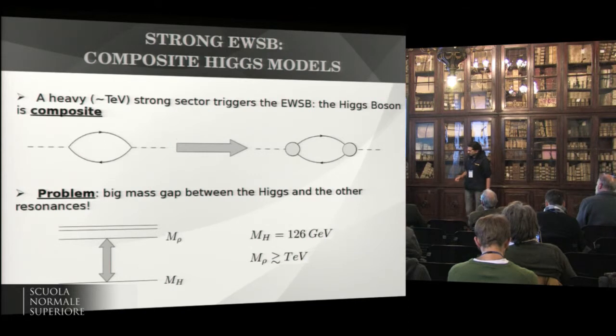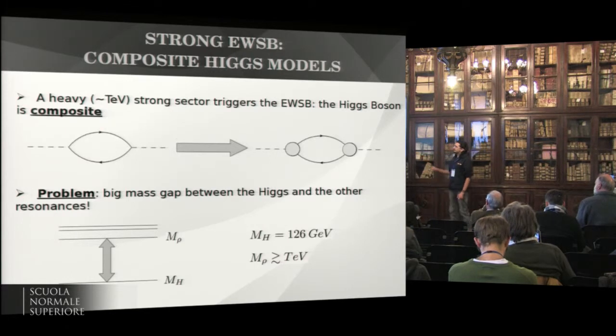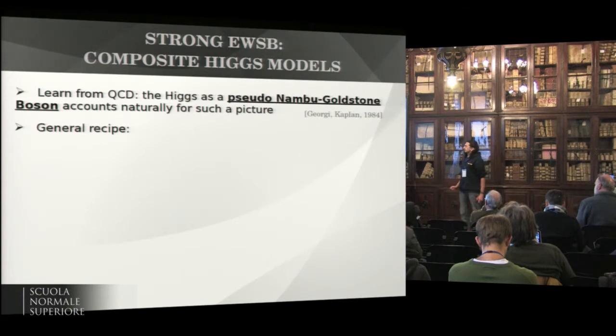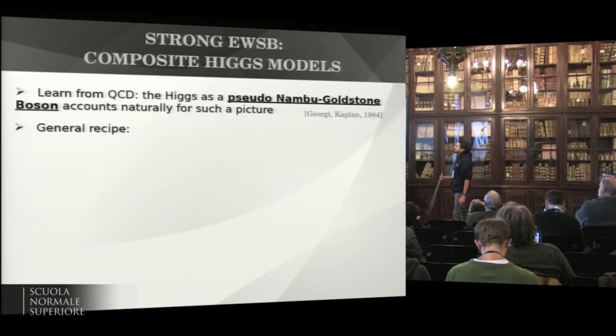But of course, it introduces another problem, because we have to face this sort of big mass gap between the Higgs, which is light, and the resonances, which are expected to appear at the TeV scale. How can we account for such a picture? We can account for such a picture by thinking the Higgs boson as a pseudo-Nambu-Goldstone boson emerging from some spontaneous symmetry breaking, just like a pion from QCD.